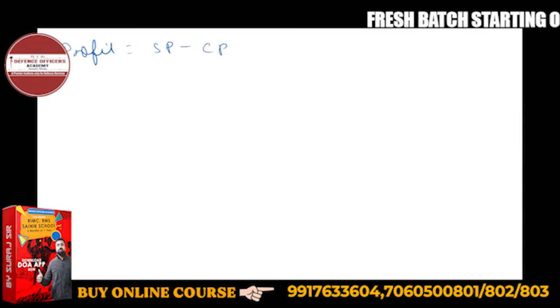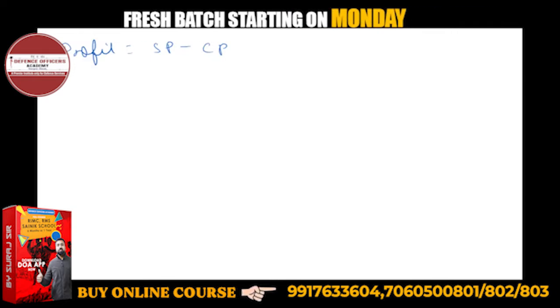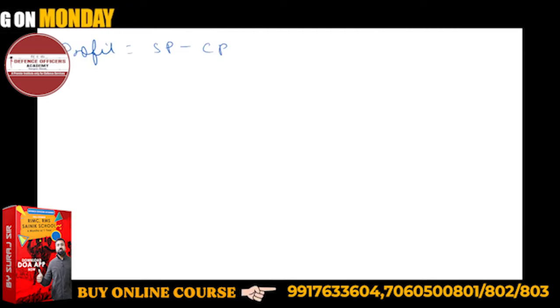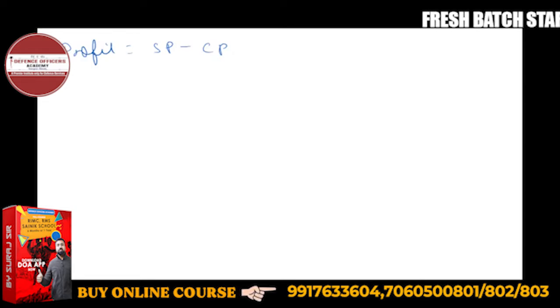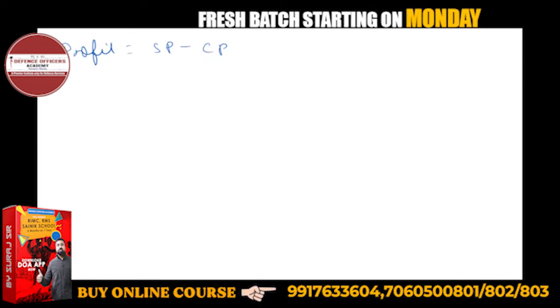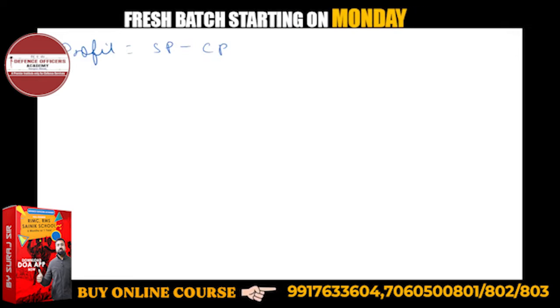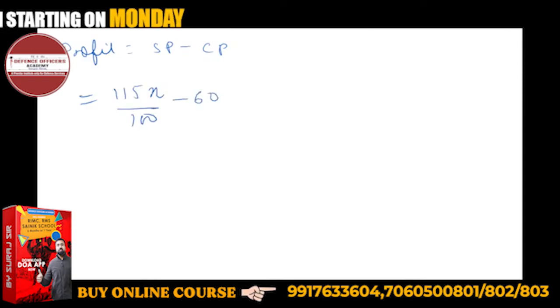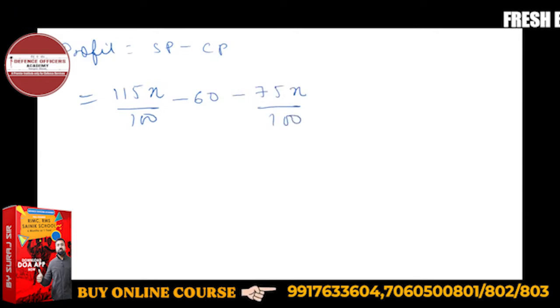Profit will be SP minus CP. So how much is SP? That is 115x upon 100 minus 60 minus CP, which is 75x upon 100. If we take 100 as the LCM, this will be 115x minus 6000 minus 75x.